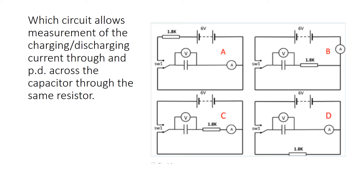Let's have a look at this question: which circuit allows measurement of the charging and discharging current through, and PD across, the capacitor through the same resistor? When you've got a question asking you to choose a circuit, you need to look at the path of the electricity through each circuit. We want to measure the charging or discharging current and PD across the capacitor, but through the same resistor — that last bit is key.